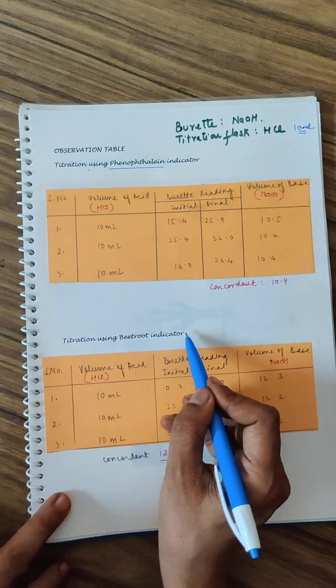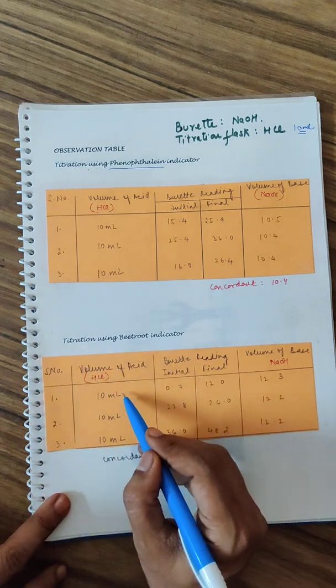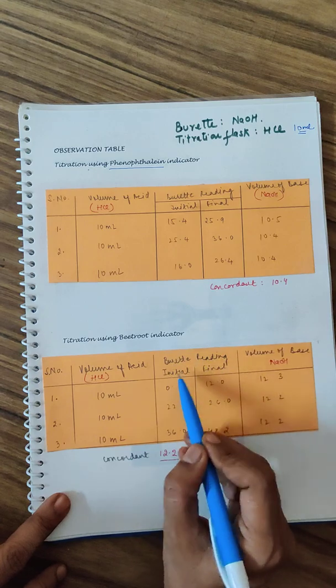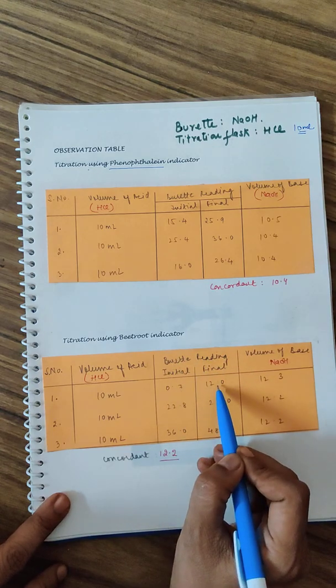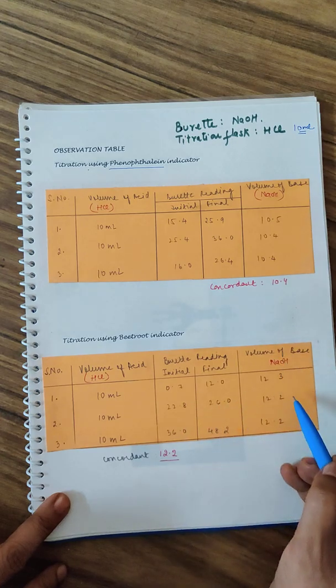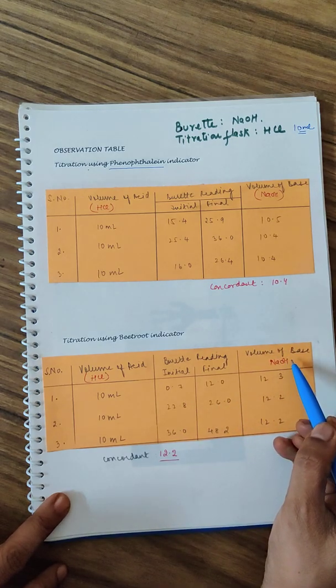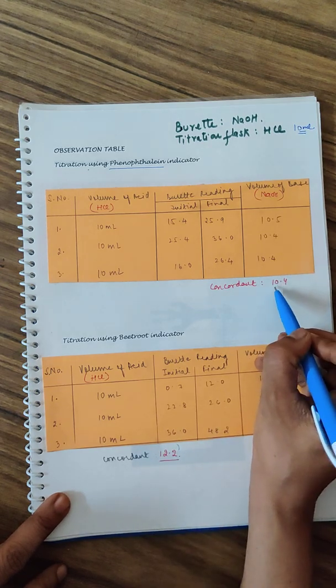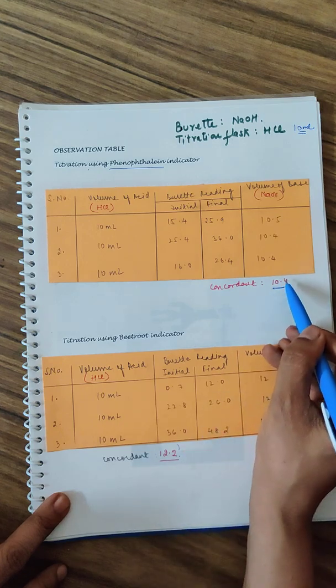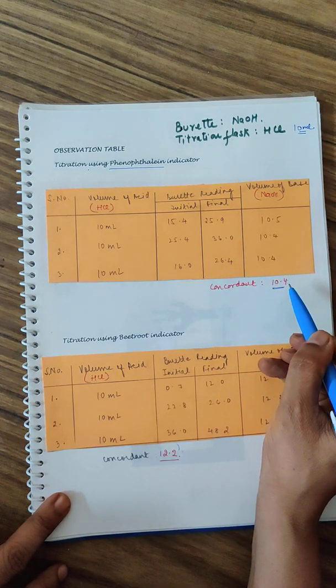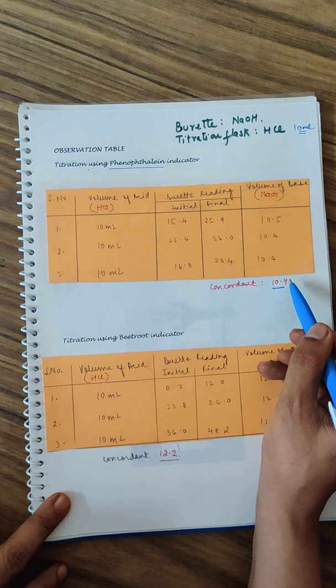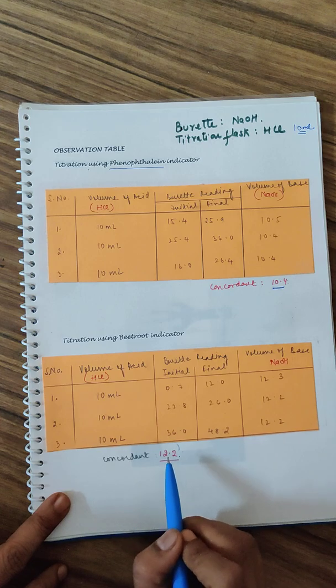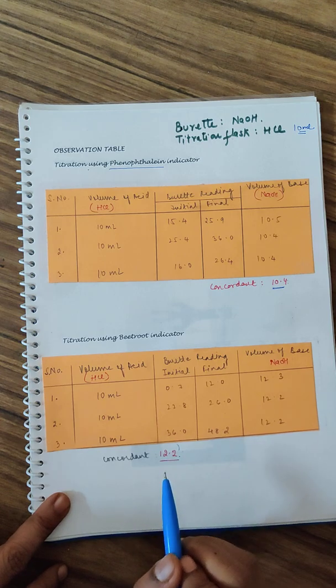Again you will be using your burette with NaOH. Titration flask me HCl lena 10 ml and add two drops of your beetroot indicator. Then start adding from the burette the NaOH. Initial and final reading monitor kariye, find out the volume difference to get the volume of NaOH used. The value comes out to be 12.2, the concordant reading. This value is more than phenolphthalein. Beetroot shows the color change when more base is added, means beetroot is showing a color change at a higher pH.